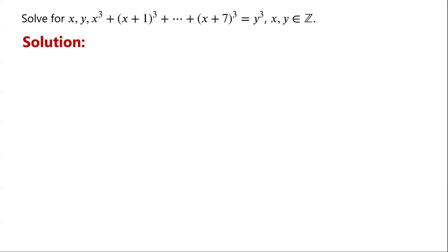Usually there are different ways to solve this kind of equation. One way might be to convert the equation to the product of two algebraic expressions of the variables of interest equals a number. Since the variables are integers, each algebraic expression is an integer factor of that number. This leads to a system of equations, which we then solve to find the integer solutions.